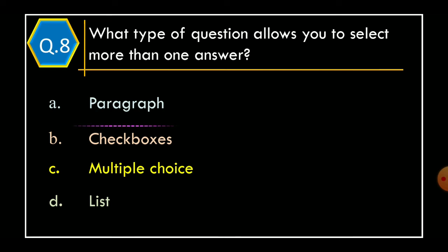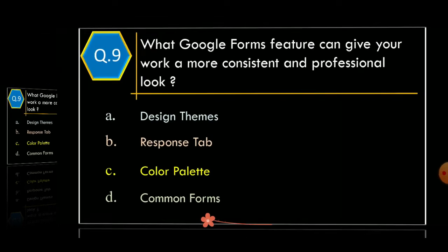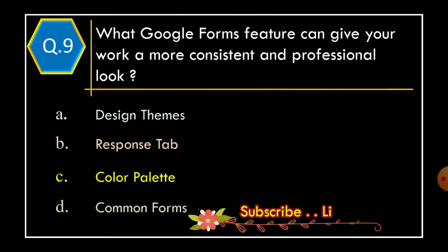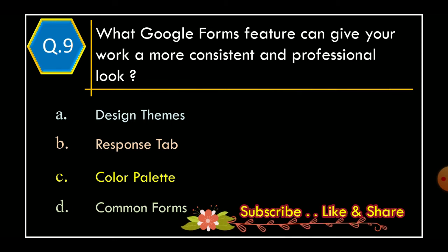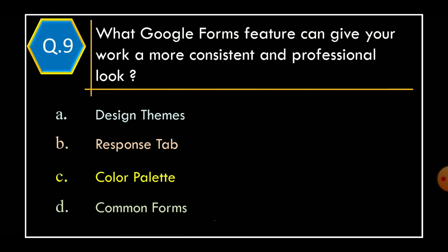Question 9. What Google Forms option or feature can give your work a more consistent and professional look? Option A, Design Themes; Option B, Response Tab; Option C, Color Palette; Option D, Common Forms. And the correct option is Option A, Design Themes.